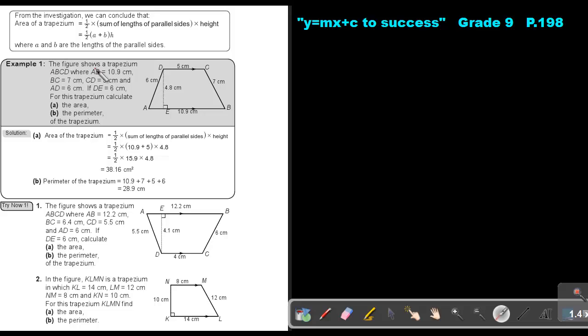Example 1, the figure shows a trapezium ABCD, where AB is 10.9, that's 10.9, BC is 7, CD is 5, and AD is 6. If DE is 6 centimeters.